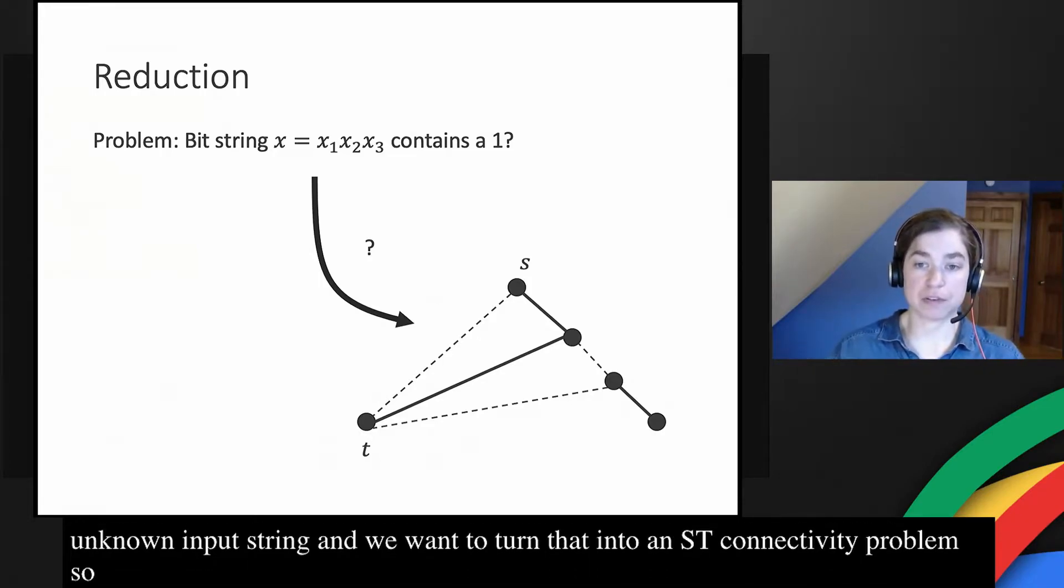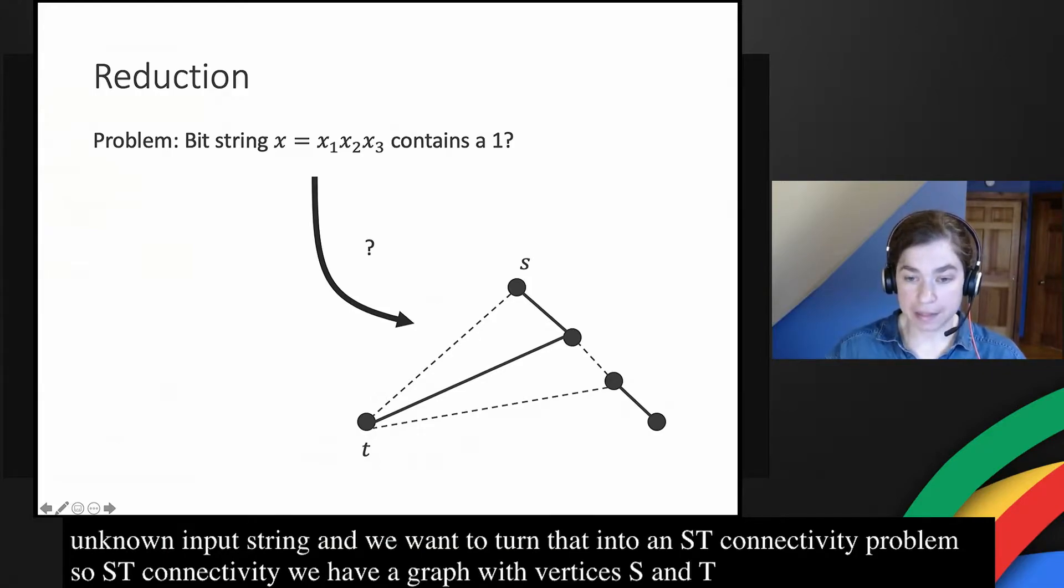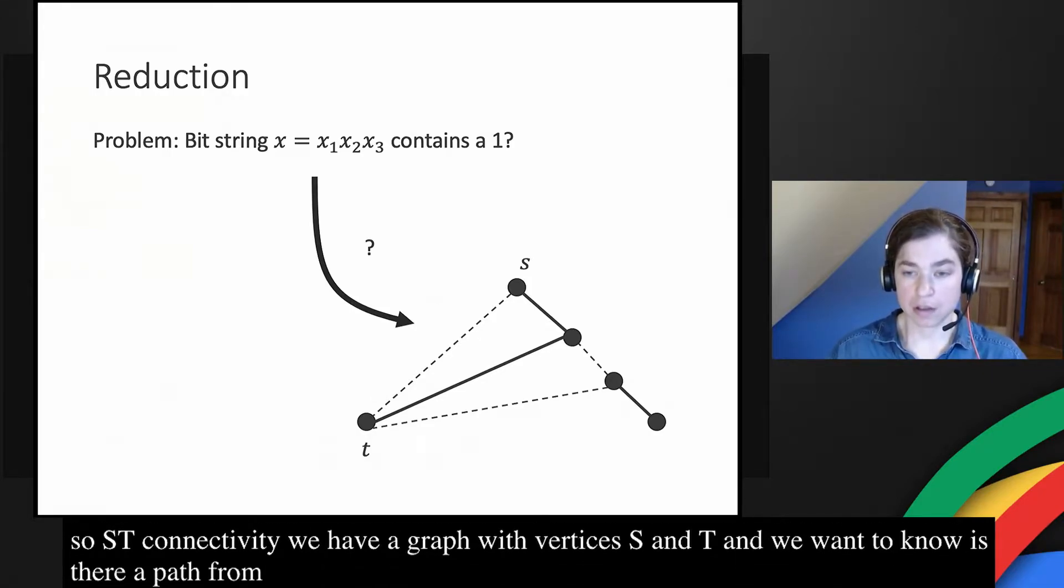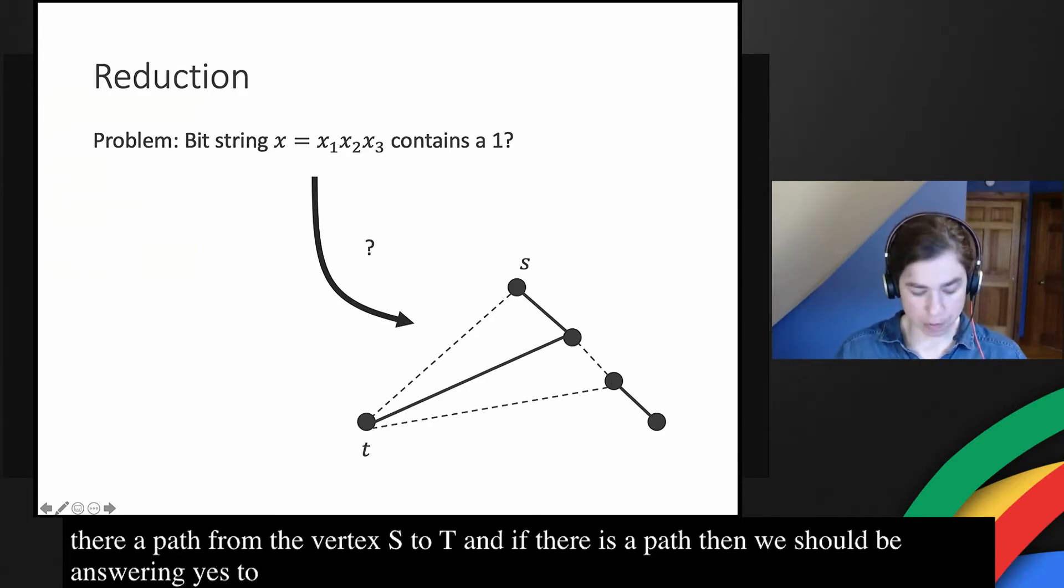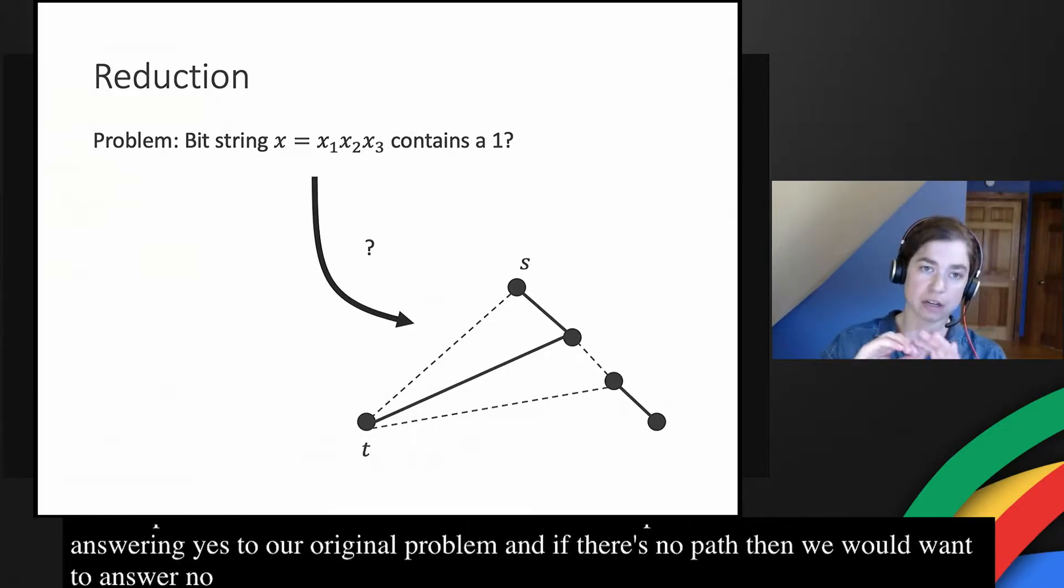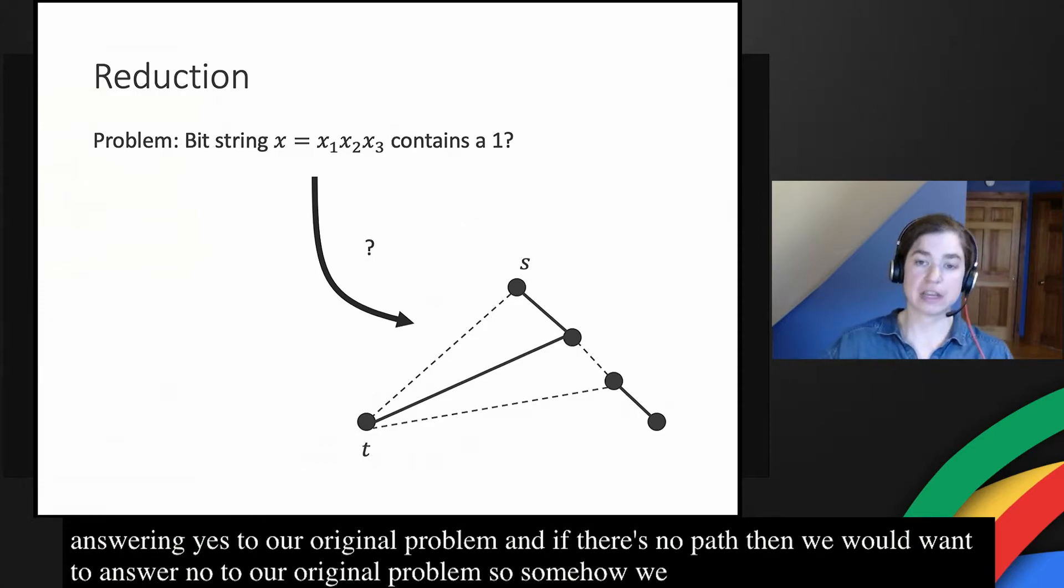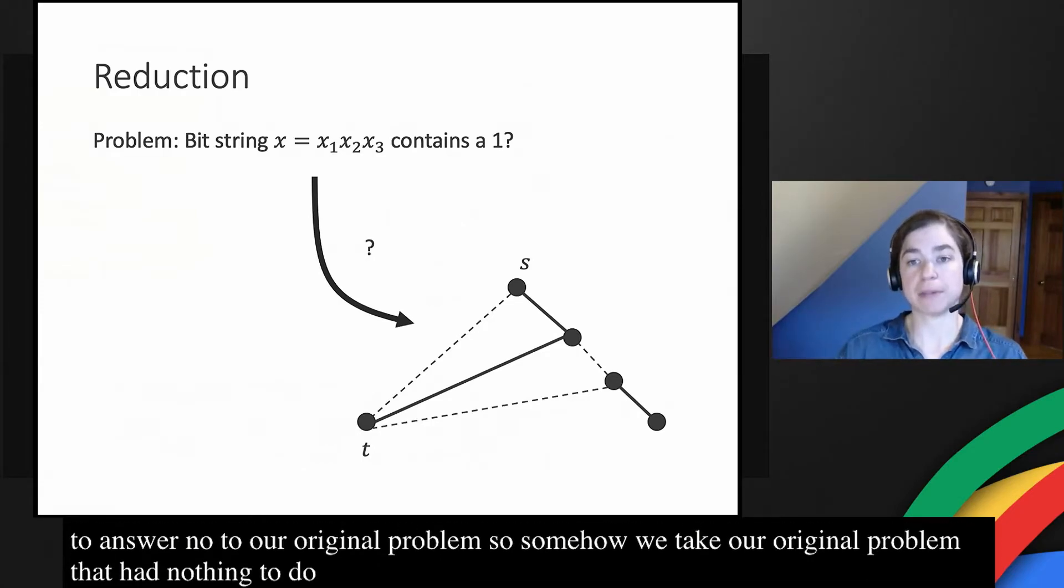In ST connectivity, we have a graph with vertices s and t, and we want to know is there a path from the vertex s to the vertex t. If there is a path, then we should be answering yes to our original problem. And if there's no path, then we would want to answer no to our original problem. So somehow we take our original problem that had nothing to do with graphs, and we turn it into this new kind of pathfinding problem that also answers our original question.